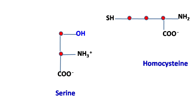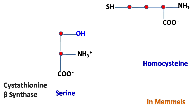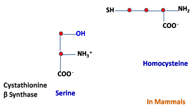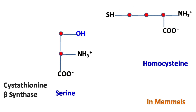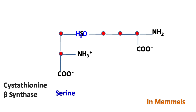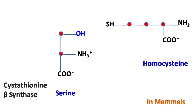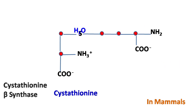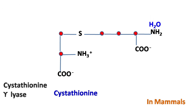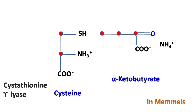In case of mammals, the reaction and the enzymes involved are different. Serine reacts with homocysteine in the presence of enzyme cystathionine beta synthase to form cystathionine. Cystathionine is then hydrolyzed by the enzyme cystathionine lyase to form cysteine.